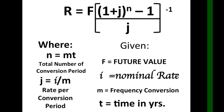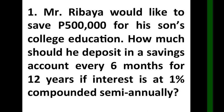Frequency of conversion depends on whether it is yearly, semi-annually, monthly, or quarterly. Example: Mr. Ribaya would like to save 500,000 for his son's college education. How much should he deposit in a savings account every six months for 12 years, if interest is at 1% compounded semi-annually?